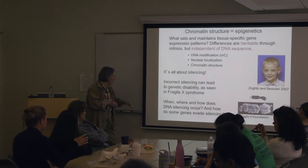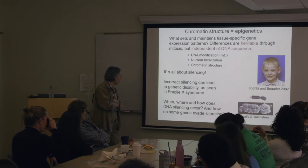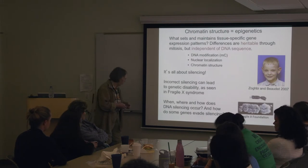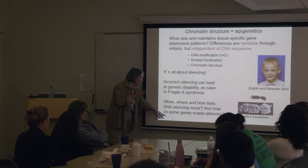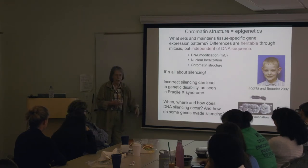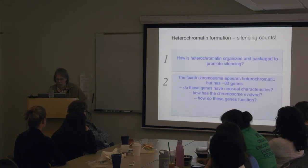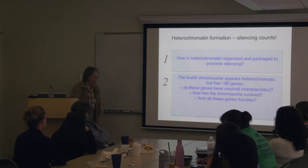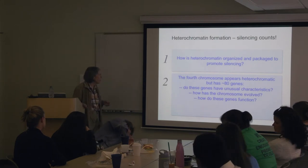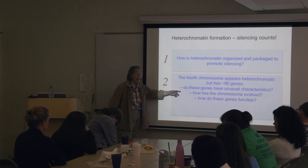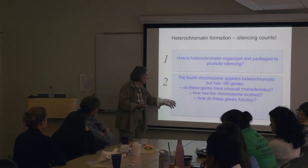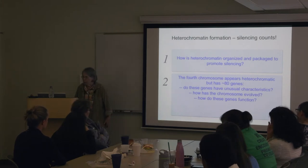The potential for manipulating the epigenetic state is something that drug companies are interested in. Looking at the genome, a lot of us are interested in when, where, and how DNA silencing occurs — how does the cell know which thing to silence? We've decided to approach this by looking at genes embedded in heterochromatin and asking how they evade silencing. In thinking about heterochromatin formation, we're interested in how chromatin is organized and packaged to promote silencing and this question of the fourth chromosome genes — do they have a promoter with extra oomph in it? How do they manage to function in that milieu?